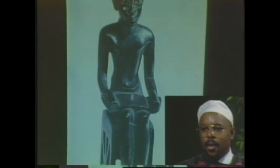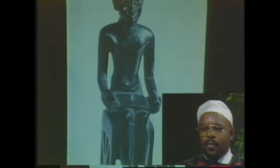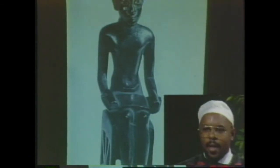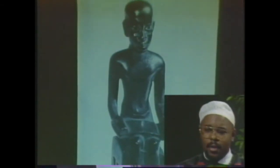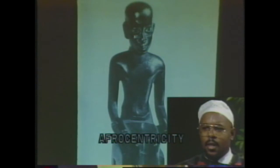Here you can see Imhotep clearly, with the Afrikoid features — the prognathous jaw, the thick lips, and the broad nose. The first multi-genius in human history designed the first monumental structure known to man — the only one of the seven wonders of the world that we no longer have to wonder about. You can still go to ancient Kemet and see these magnificent monuments. Imhotep was also the grand vizier under the pharaoh King Zoser, and he was so accomplished in medicine that in later kingdoms he was actually deified and made a god.